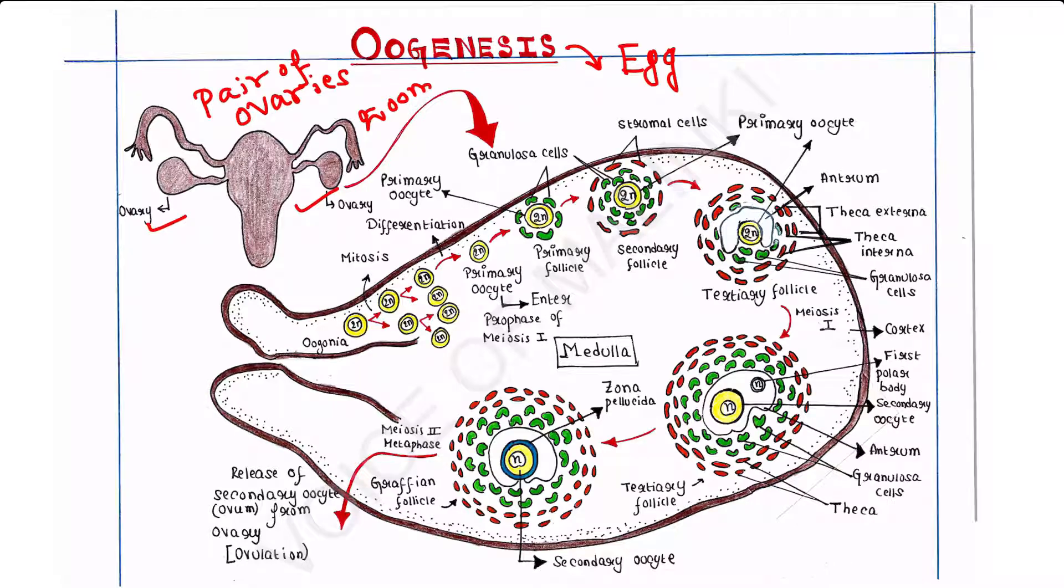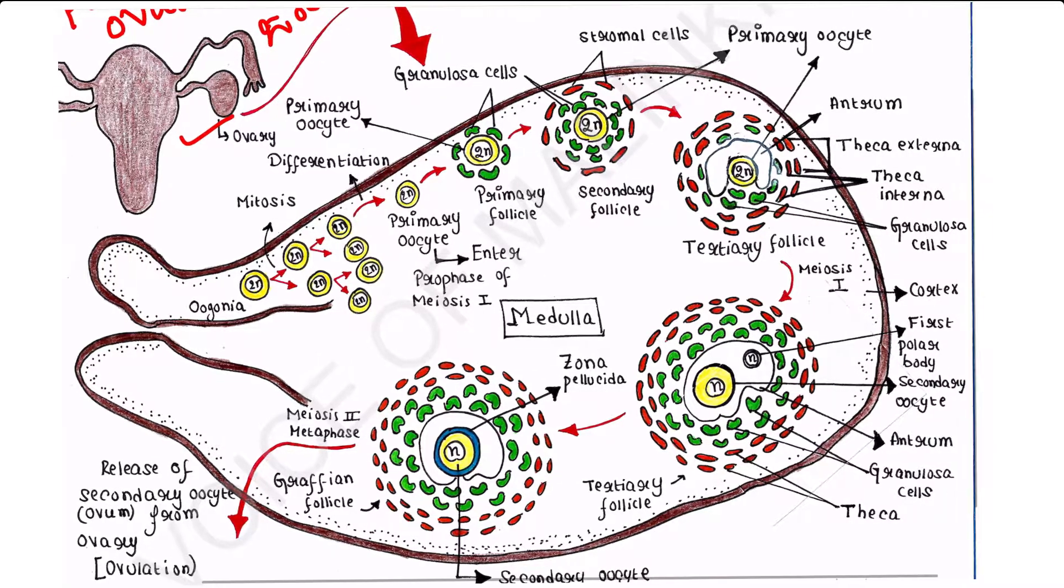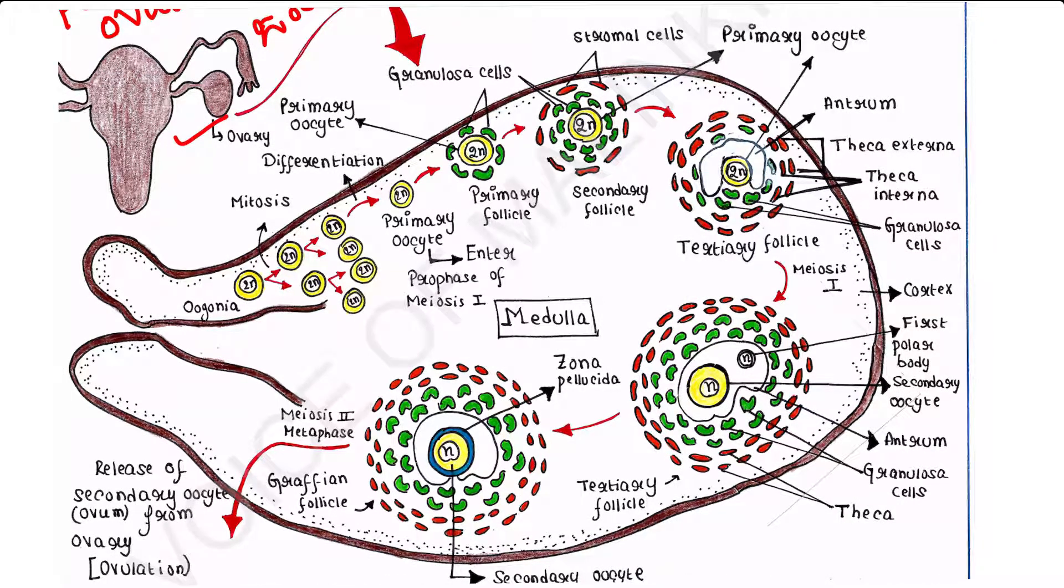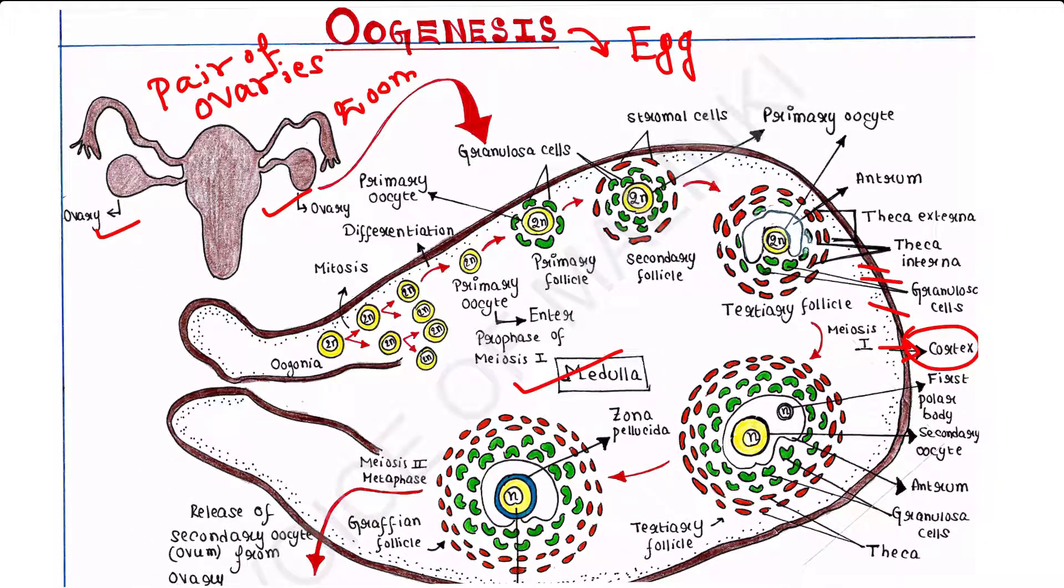Each ovary is divided into two zones. One is the peripheral zone called cortex. This is the periphery, the surface of the ovary called cortex. Another zone is the inner zone called medulla. Oogenesis occurs in cortex.